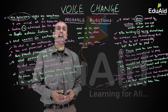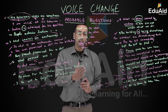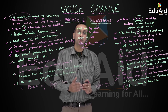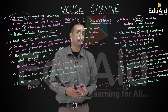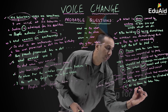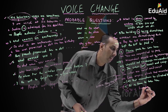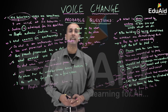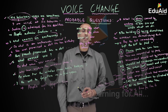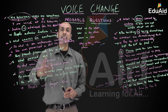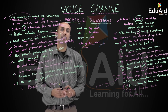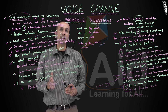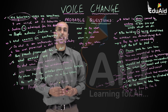Question number fifteen: 'It is time to take tea.' The passive form is: 'It is time for tea to be taken.' So here we have solved fifteen questions with basic tips on how to solve voice change questions quickly in your examination. Hope you have understood the basic concept discussed with each question. Thank you.